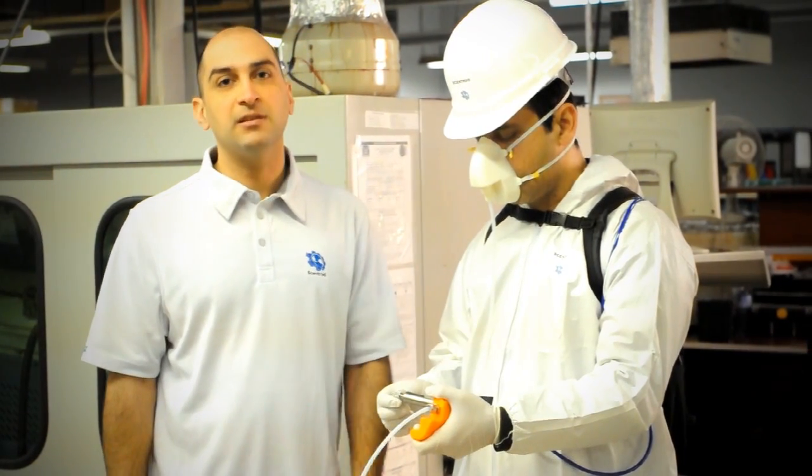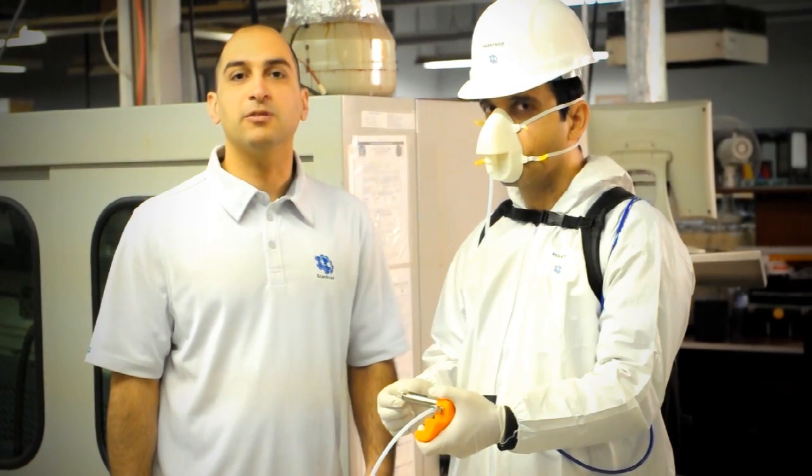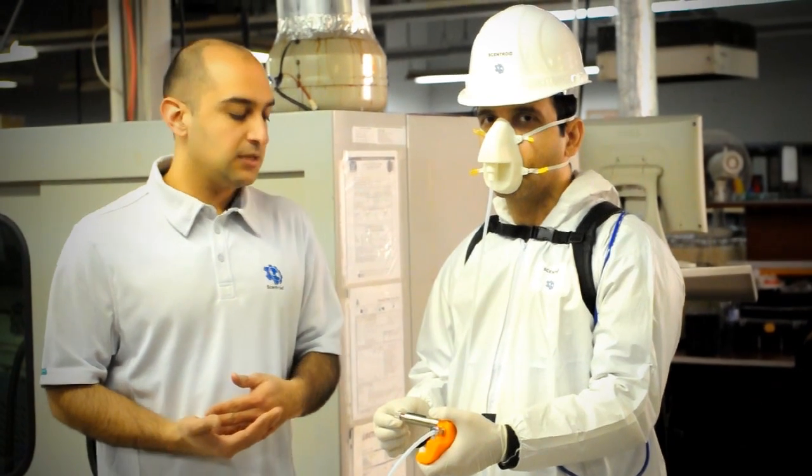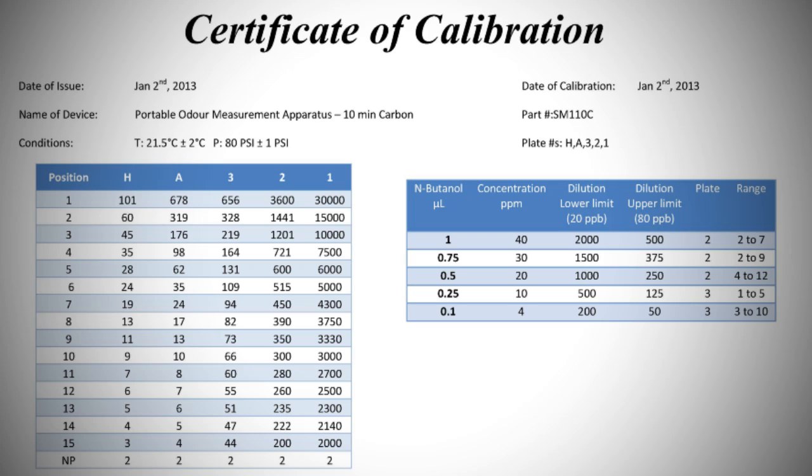Here we have installed the plate H which gives us the odor threshold range between two odor units and 100 odor units. So we can look up from our chart and determine what step four is in terms of the odor units.